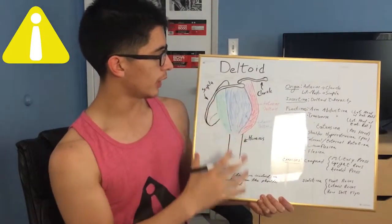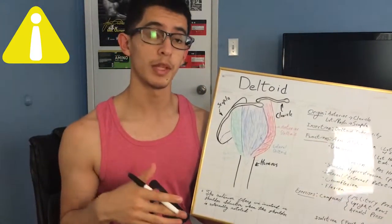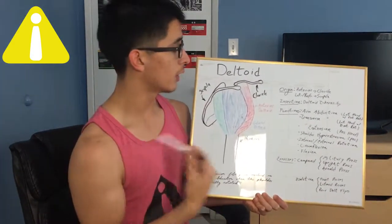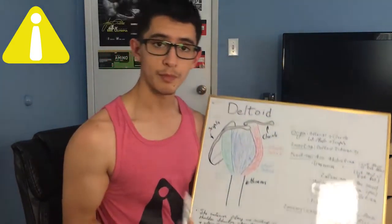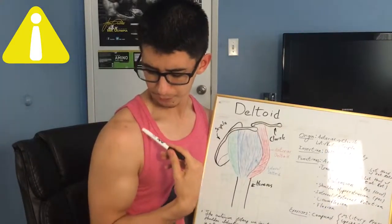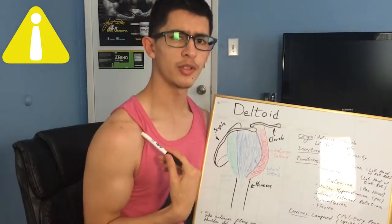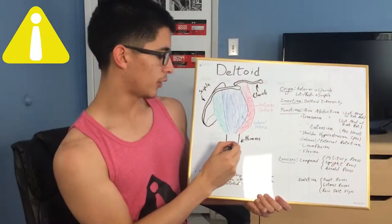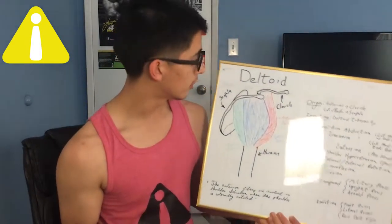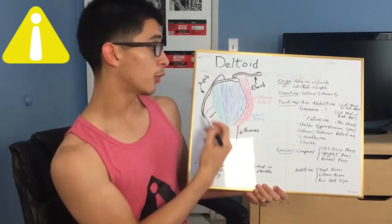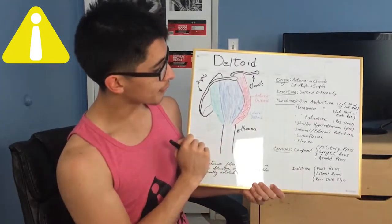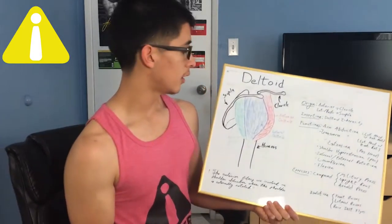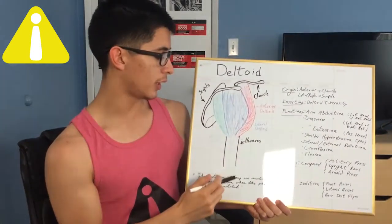I drew here the clavicle or your collarbone, next is the scapula or your shoulder blade, and then the humerus or your upper arm bone. In the front we have the anterior deltoid, to the side we have the lateral deltoid, and to the back we have the posterior deltoid. The origin of the anterior deltoid is the clavicle — it originates around here, similar to the chest muscle — and then it inserts into the deltoid tuberosity of the humerus, as do the other heads.